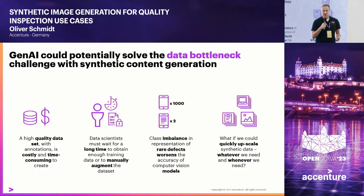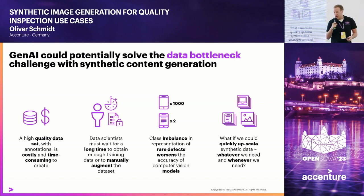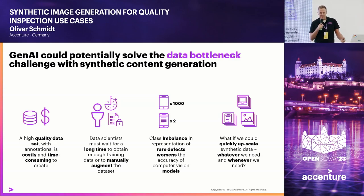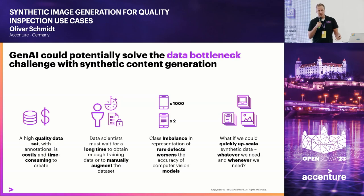It's extremely time-consuming and costly. One of the biggest issues here is that in manufacturing, the suppliers usually — in quality inspection use cases — send you products that don't have defects, because otherwise they are not good suppliers. So having a good representation of defect categories to avoid class imbalance is key to good computer vision use cases.